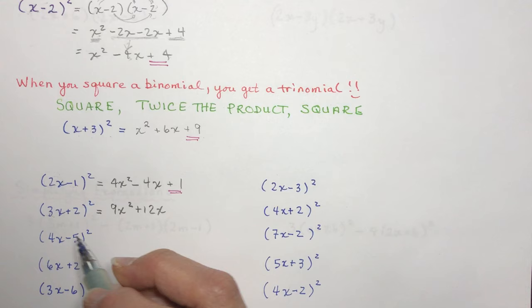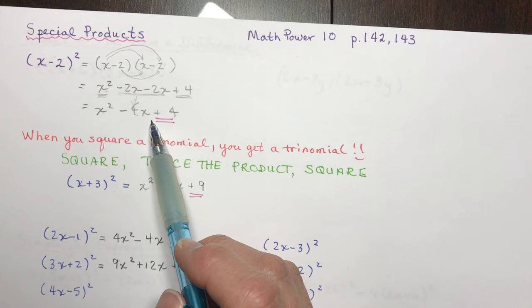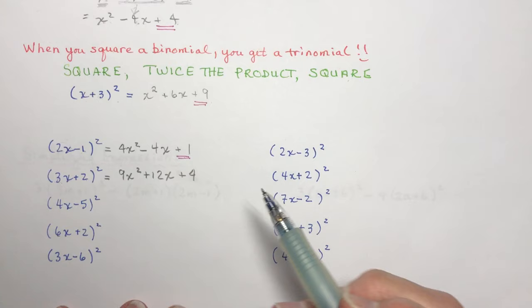You don't need to write out the full expansion. I see so many grade 11 students doing it the long way — that's way too long. Square, twice the product, square. Say that every time before you go to bed and you'll be nailing this in no time.